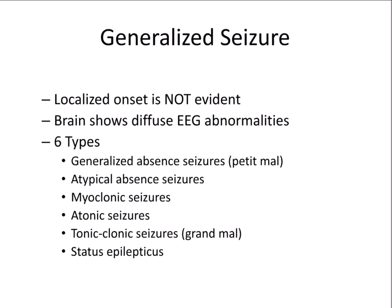The other kind are known as generalized seizures. In a generalized seizure, a localized onset is not evident — the brain doesn't show EEG abnormalities in just one region; the changes are diffuse throughout the brain. There are six types of generalized seizures: generalized absence seizures (also known as petite mal), atypical absence seizures, myoclonic seizures, atonic seizures, tonic-clonic seizures (also known as grand mal), and status epilepticus, which is considered a medical emergency. The other PowerPoint has videos of all of these types.